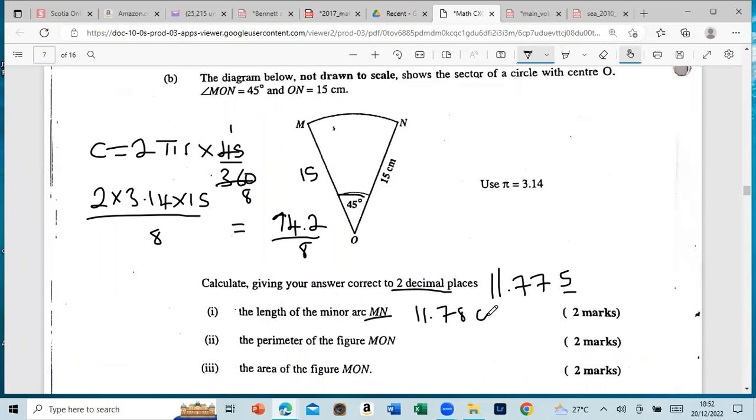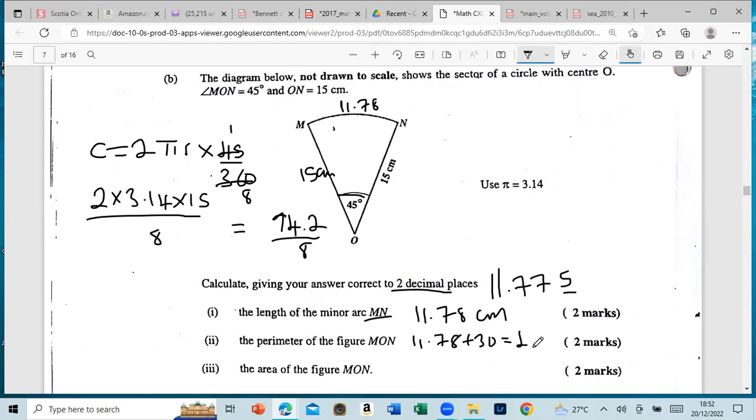And because this length is just centimeters. So it asks us for the perimeter of the figure MON. They want to find the distance, so this side will be 15, this side will be 11.78 because they told us to round it off. So it will be this plus this, which is 41.78, and you get another two marks.